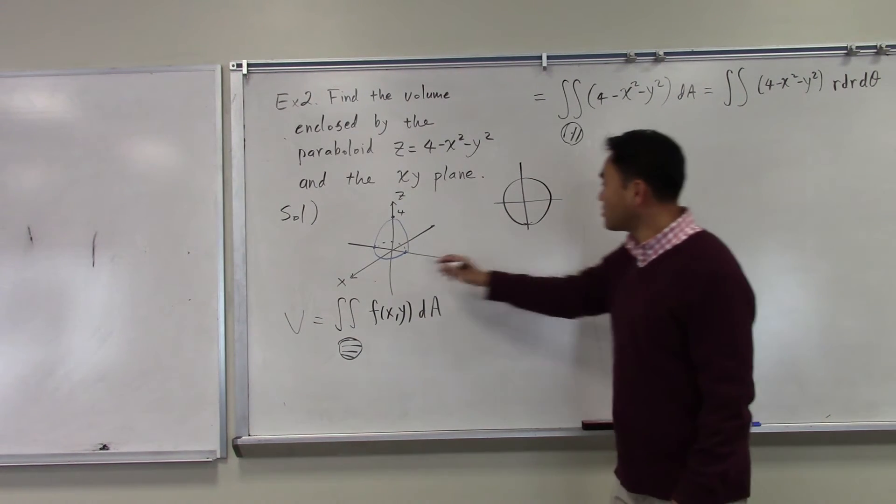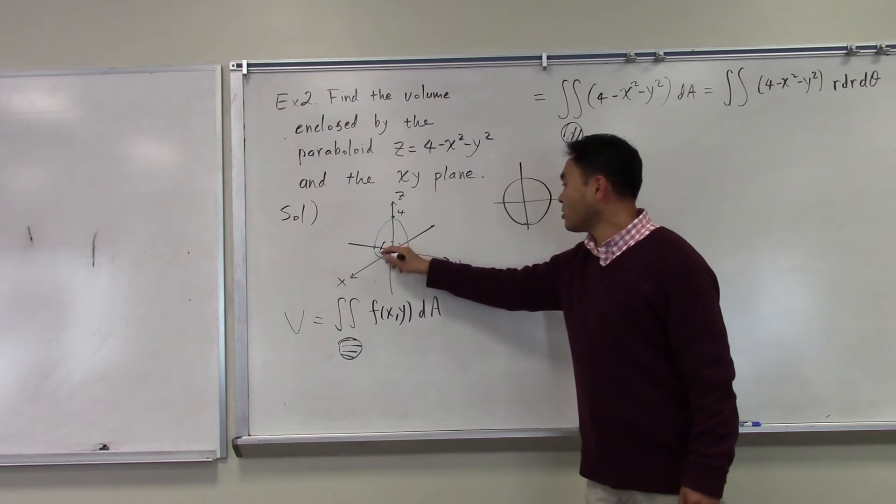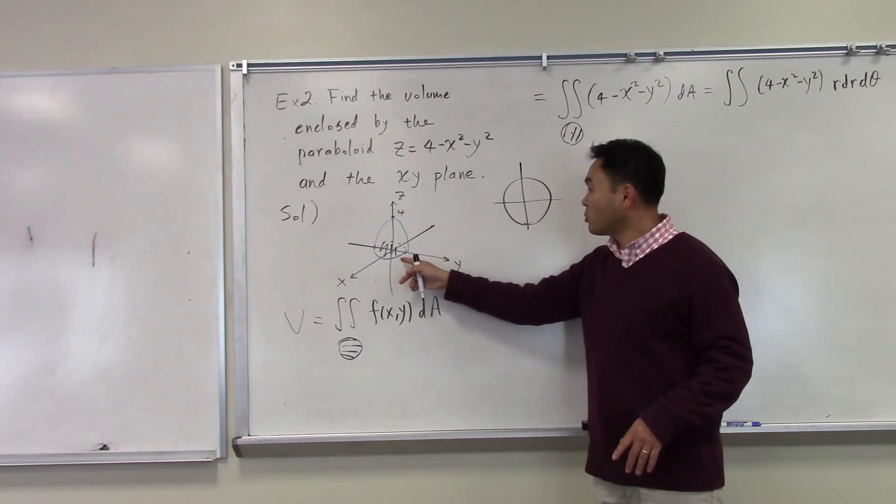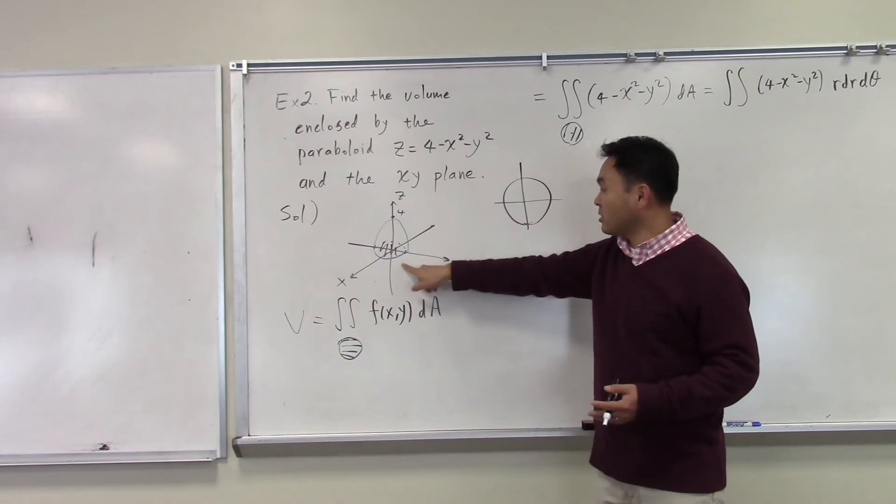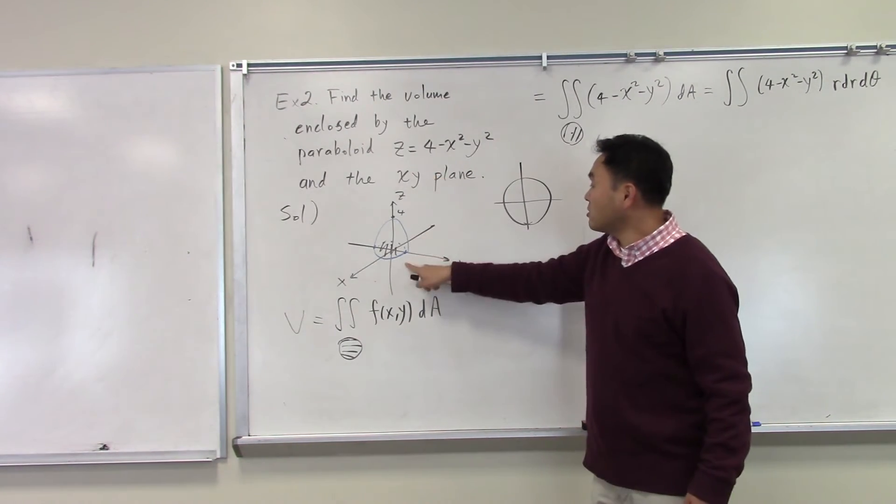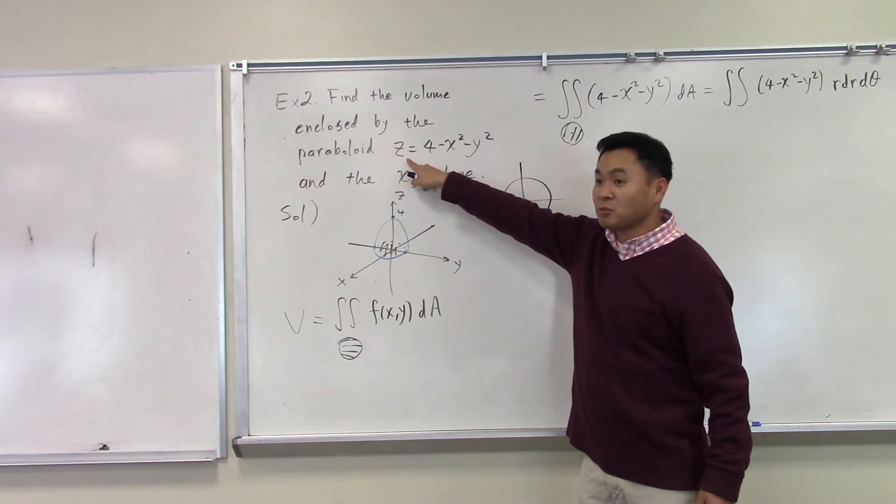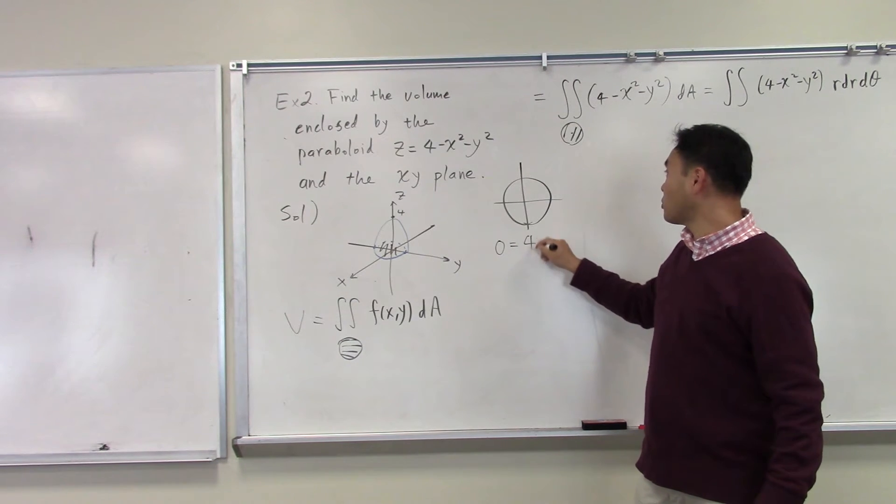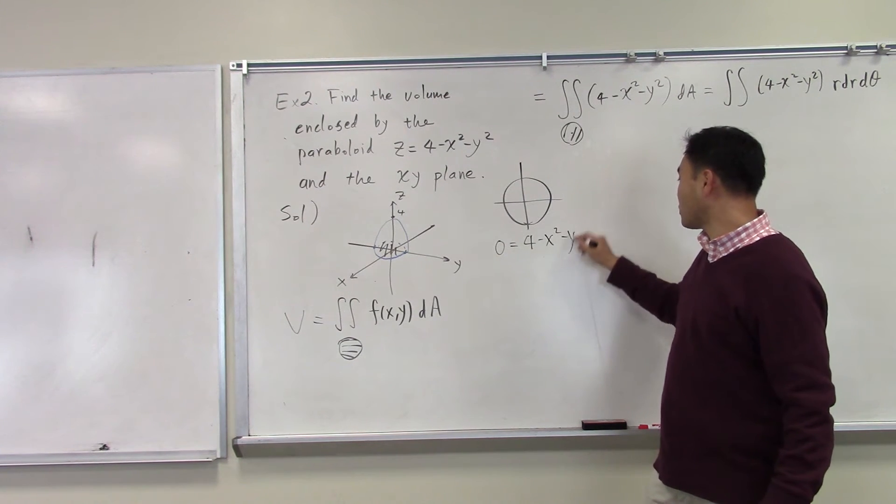Oh, by the way, what is this circle at the base? That circle at the base is actually the xy trace because it's where this paraboloid intersects with the xy plane. In order to find that out, since xy plane is z equal to 0, you plug in 0 for z, and you get 0 equals 4 minus x squared minus y squared.